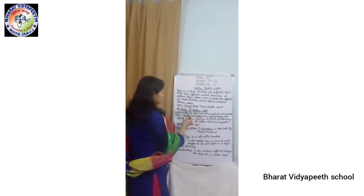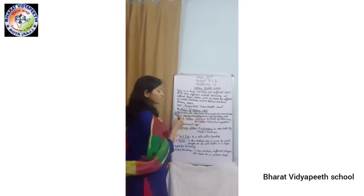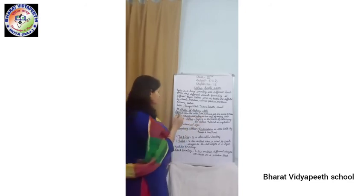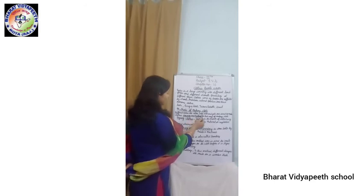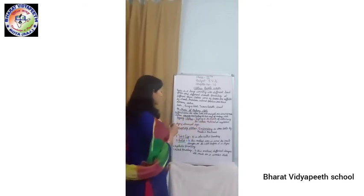Methods of making clothes: different fibers like cotton, wool, silk, and jute are used to make clothes.